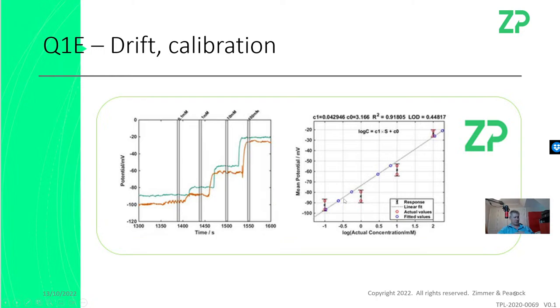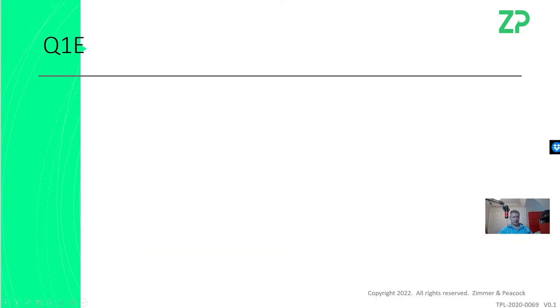Many of our sensors are originally developed for actual medical applications. For example, potassium sensing, you take a drop of blood, it has potassium in it, you put it on the sensor, you get a reading, you dispose of the sensor. That gives you a sense of the kind of workflow that the potassium sensor was originally developed for.